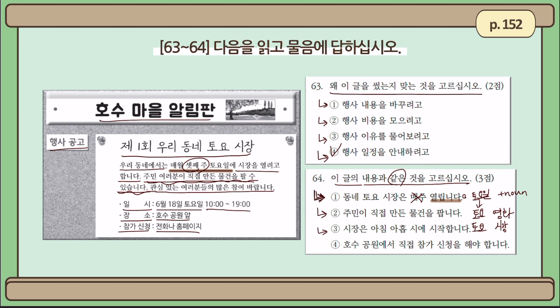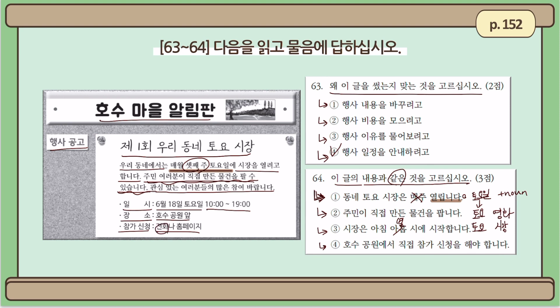Option three: 시장은 아침 아홉시에 시작합니다. We already noted it's supposed to start at 10 a.m., not 9 a.m. — so 시장은 아침 열 시에 시작합니다. Option four: 호수 공원에서 직접 참가 신청을 해야 합니다 — you should personally apply at 호수 park. That's also incorrect, because you can apply either via phone or on the webpage. So the only correct answer is number two: 주민이 직접 만든 물건을 팝니다.